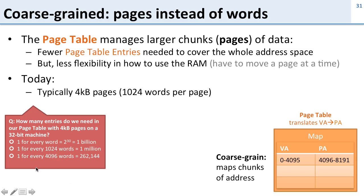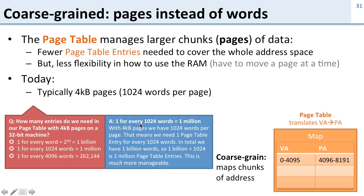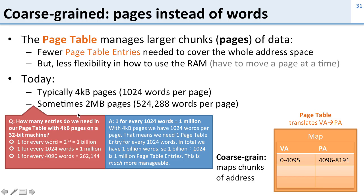So before our page table was a gigabyte in size; now it's going to be about four megabytes, which is much more reasonable. And people even go further than this. Today you have lots of 64-bit machines, and it's getting very common to use two megabyte pages. In a two megabyte page you get 520,000 words per page, which allows you to cover more memory space with a smaller page table. The trade-off is you have to move a whole page at a time, so you get less flexibility — you're moving 4,096 bytes at a time whenever you need to swap something out to disk.